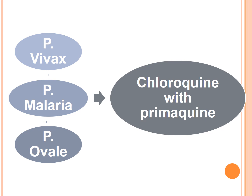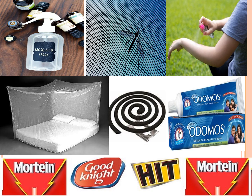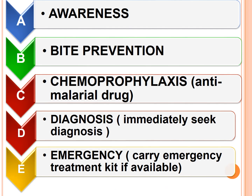P. malariae and P. ovale can be treated with chloroquine. Prevention includes the use of mosquito nets, topical repellents such as mosquito repellent creams, insect killers, awareness, white prevention measures, chemoprophylaxis, and anti-malarial drugs.